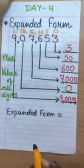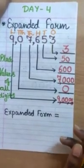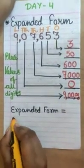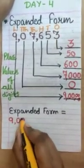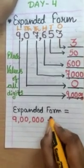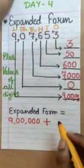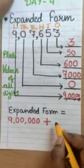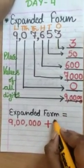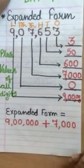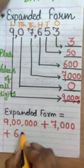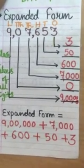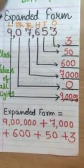So, let's start writing the number in its expanded form. Let's begin from the bigger number, greater number which is 9 lakh. So, let's write 9 lakh plus the second place value, it is 0. So, no need to write 0 because 0 does not have any value here. Let's write about the next digit and its place value which is 7,000. Then, add 600 plus 50 plus 3. So, this is the expanded form of our given number.